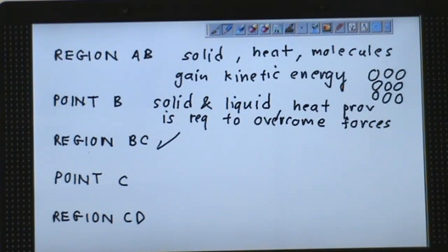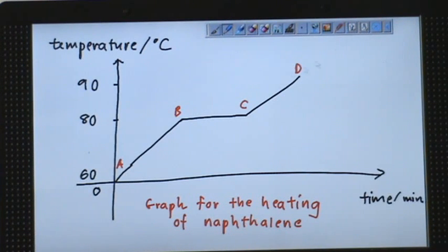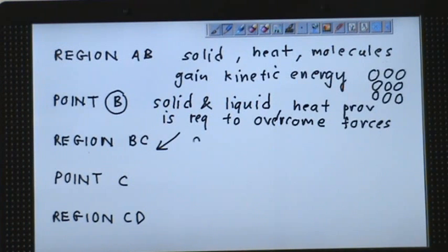So this occurs at region BC. B is the beginning of the breaking of the bond. So here you will observe that the state of the naphthalene is in solid and liquid, a mixture of solid and liquid. The temperature will remain constant. If you notice the graph, it shows that it is at 80 degrees Celsius. So this 80 degrees Celsius is what we call a melting point.